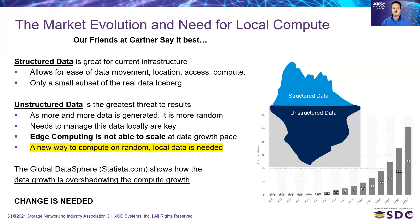So what is the market evolution looking like and the need for local compute? Our friends at Gartner have one of the easiest ways to look at that, and this comes back to this concept of structured and unstructured data. I love the iceberg representation because it shows how little information we really deal with compared to how much is actually being generated. You can see highlighted on the screen: a new way to compute on random local data is needed.